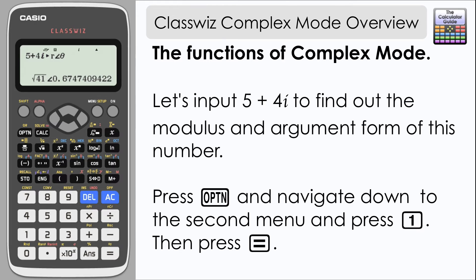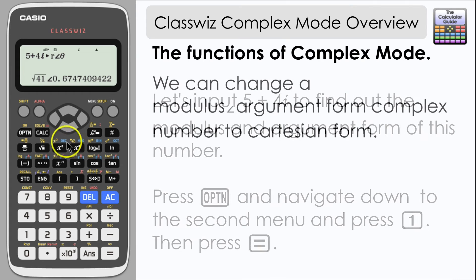You can choose to have it in degrees, however. And we can also do that the other way around. So we can change a complex number where we know the modulus and the argument into a Cartesian form complex number. So let's try that with a complex number with a modulus of 8 and an argument of pi over 6.